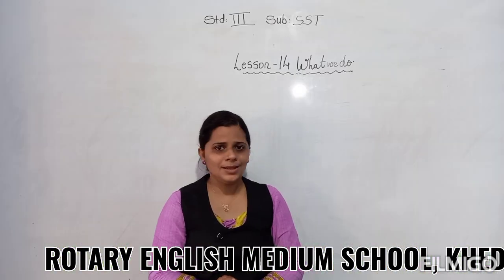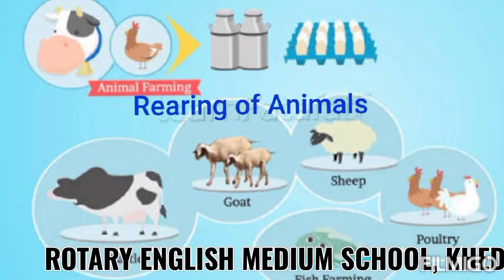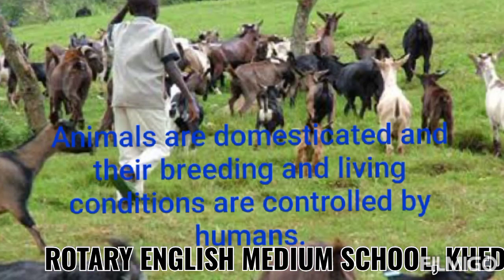So let's start the second occupation, that is rearing of animals. Now my dear children, as you all know, various types of animals are reared for a variety of purposes. Rearing of animals is an important branch of modern agriculture. These animals are very useful in agriculture. Animals are domesticated, and their breeding and living conditions are controlled by humans.